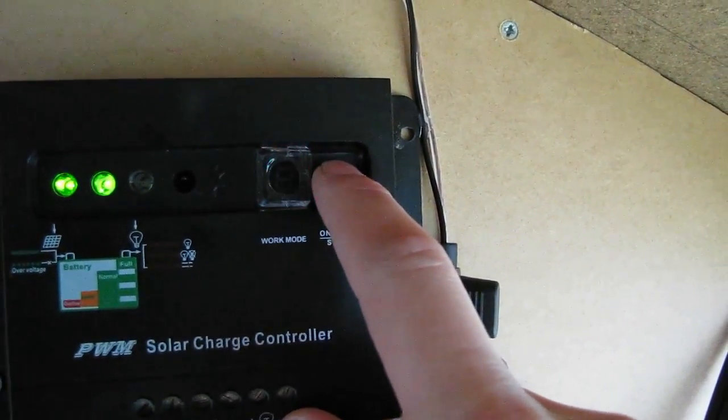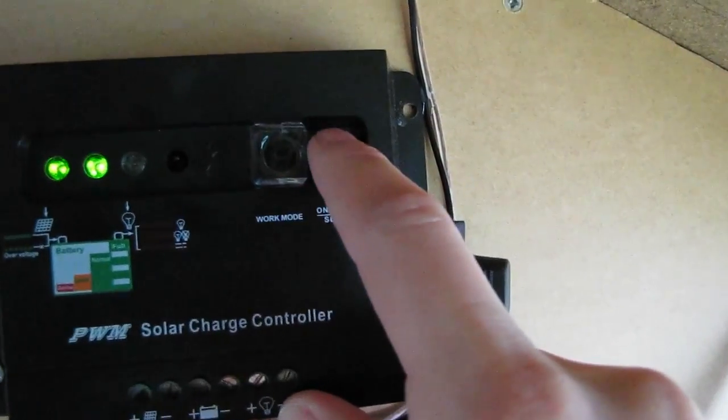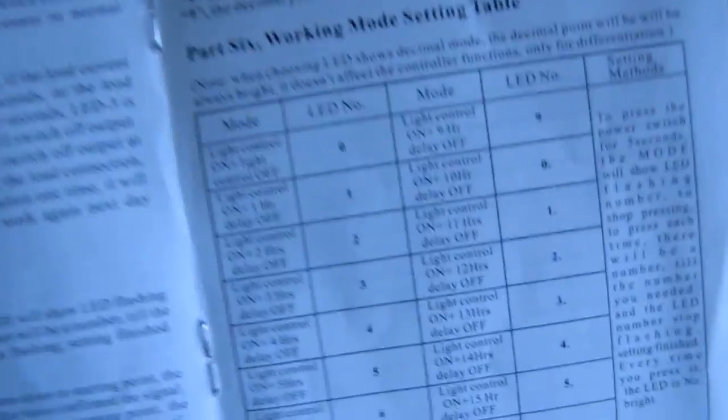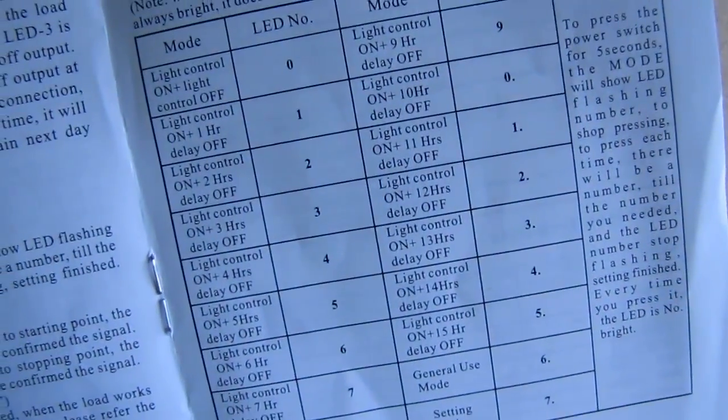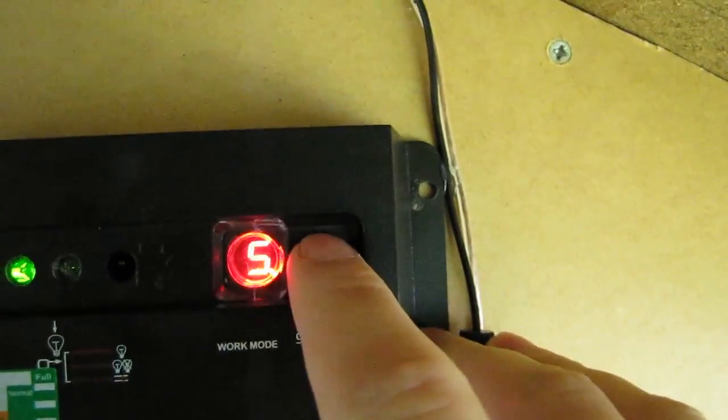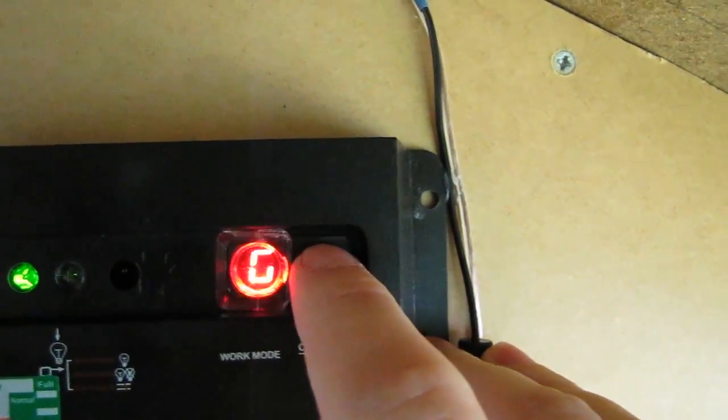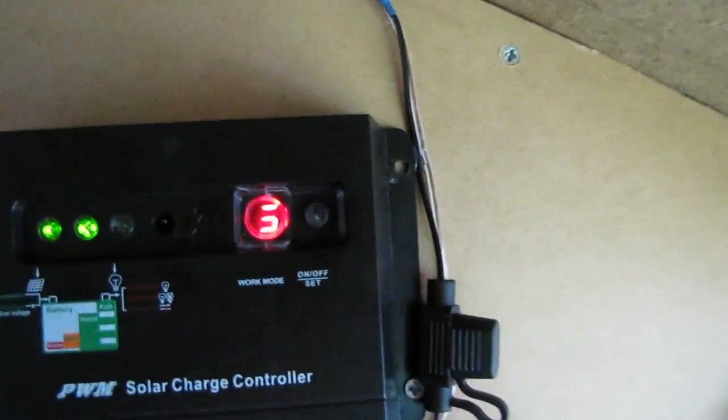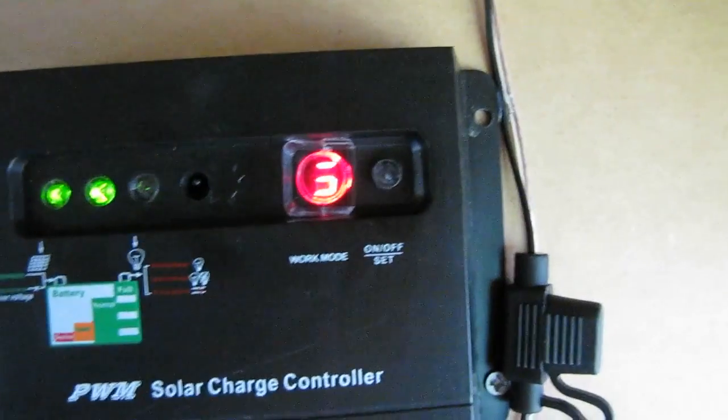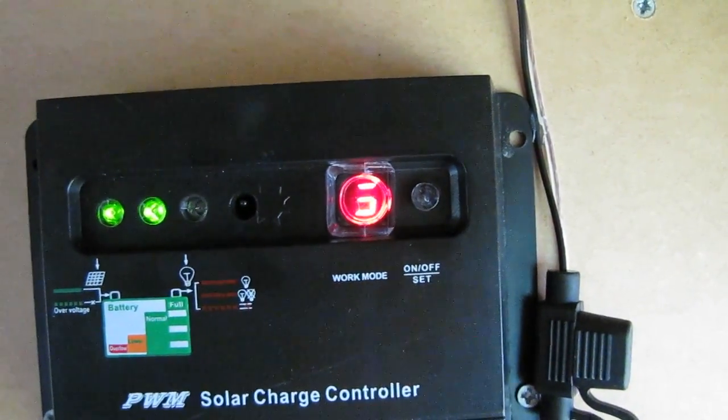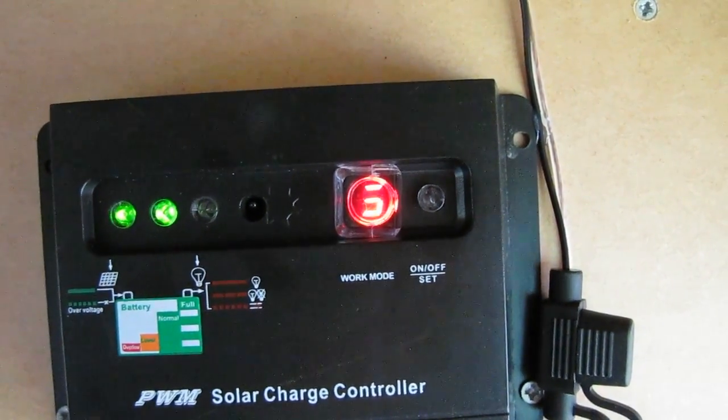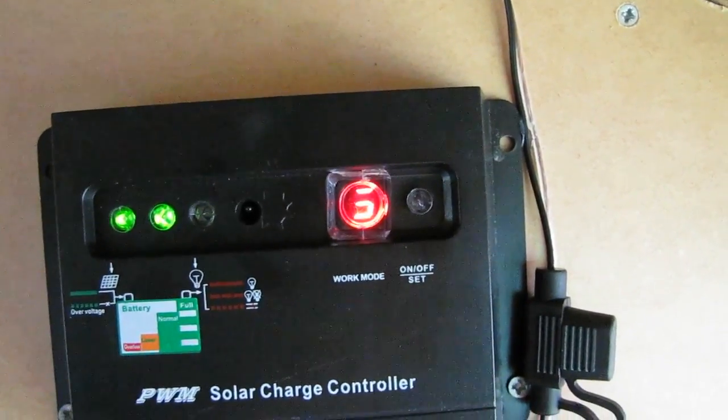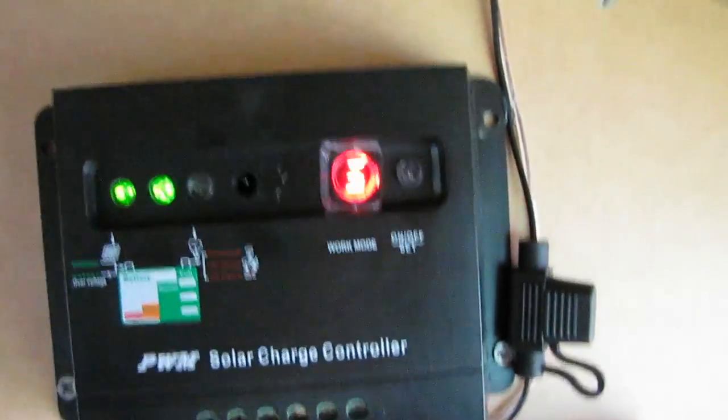And then just scroll through. Say you wanted it on for 3 hours after dark. You would go to number 3 without the decimal point. And then when you find number 3, you just leave it and it will go solid. And now it's set to go on for 3 hours after dark and then it will turn itself off after that time.